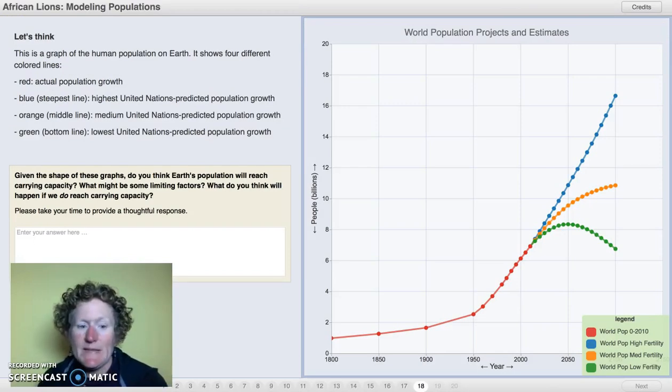Now, let's apply what we've learned about bacteria and lions' population growth to humans. Here are three different growth curves for human population growth. This is the highest model predicted by the United Nations. This is kind of the medium growth model. And this would be the lowest United Nations predicted model. Given the shape of these graphs, do you think Earth's population will reach a carrying capacity? What might be some limiting factors? What do you think will happen if we do reach carrying capacity? This kind of requires you to pause the video and do some thinking. It depends on which model might be correct. For this model, I think we definitely would reach carrying capacity if we continue to grow at that rate. That's a little bit scary. We might run out of some things like food or water or space.